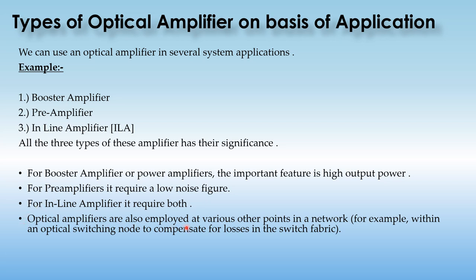Optical amplifiers are also employed at various other points in the network. These three types of amplifier are not only used in the optical link but can also be used at various other points in the network, such as optical switching nodes to compensate for losses in the switch fabric, or anywhere in an optical segment where specified losses need to be compensated.